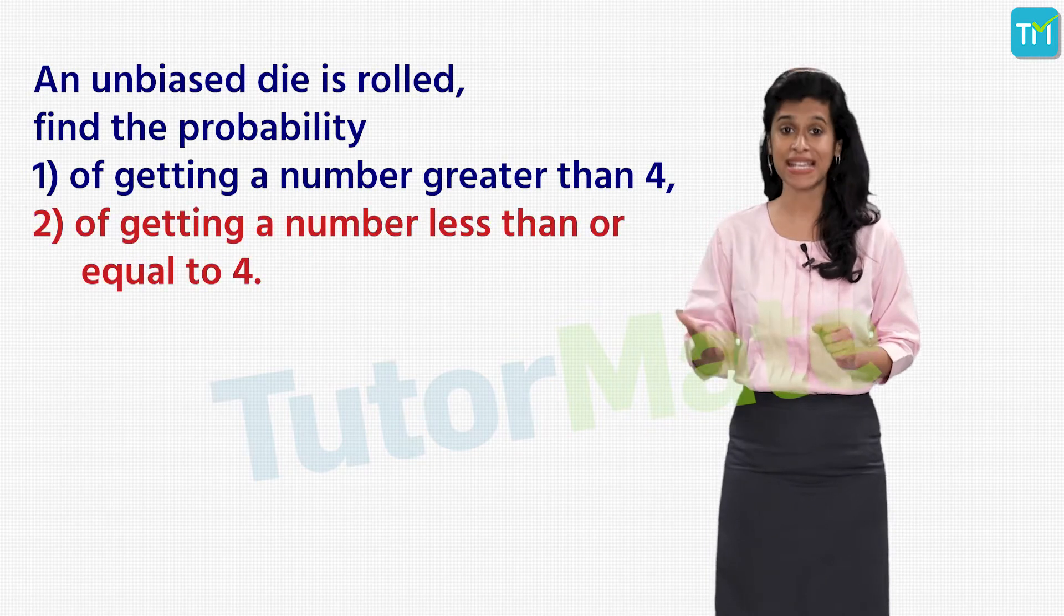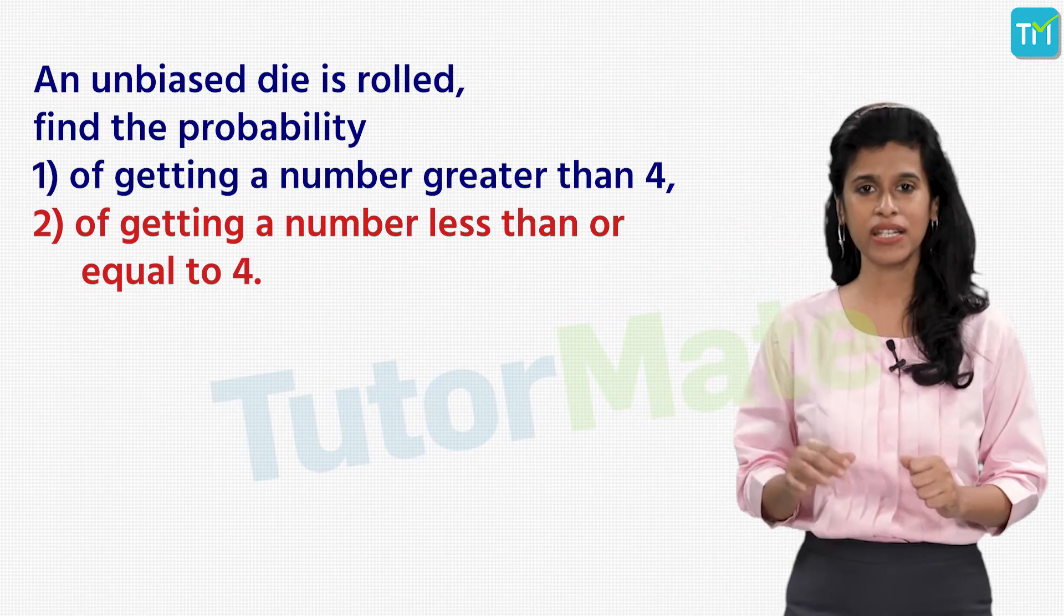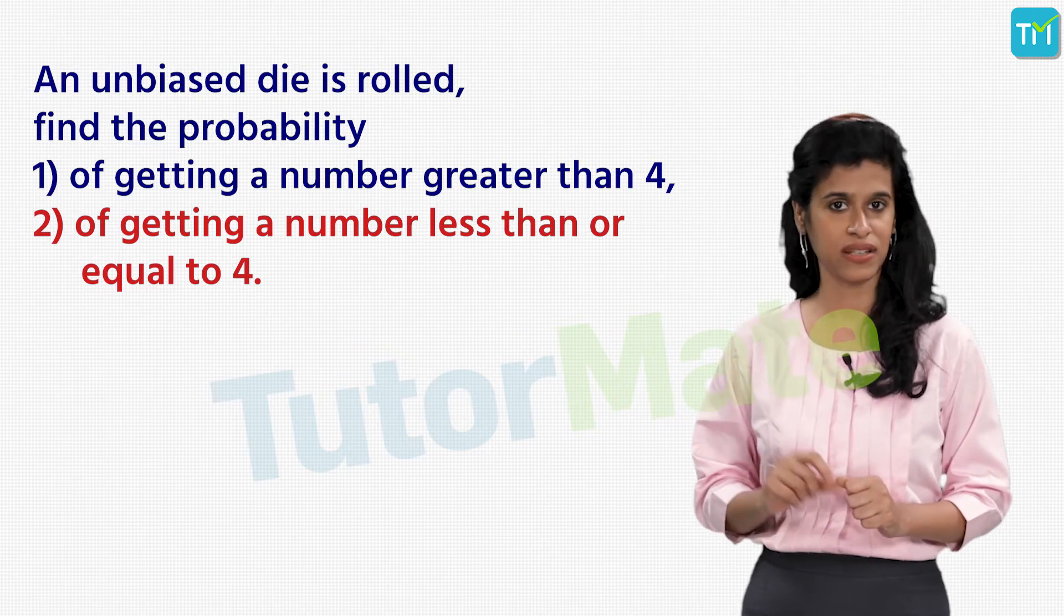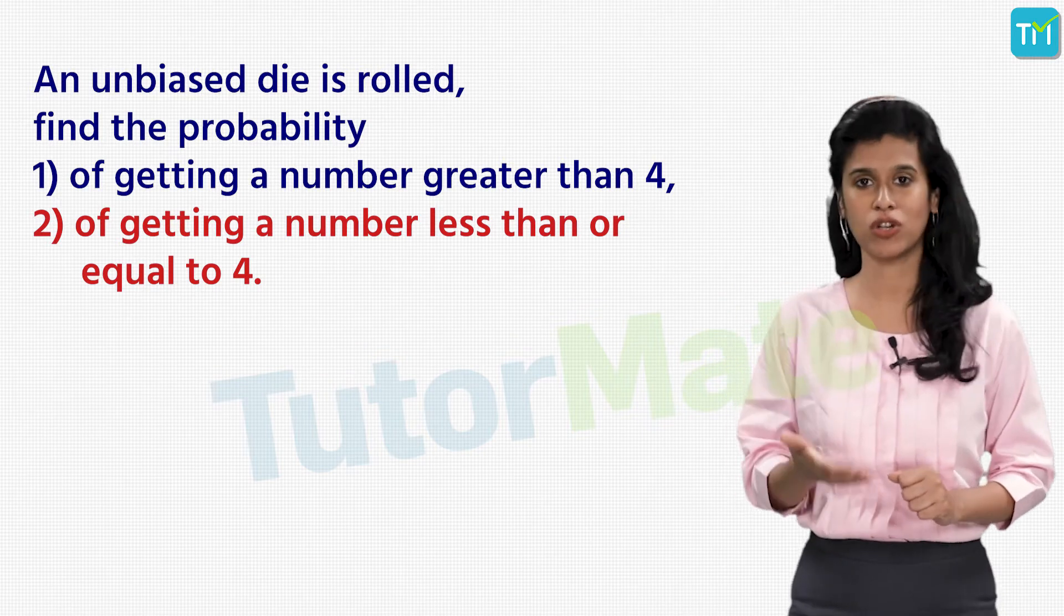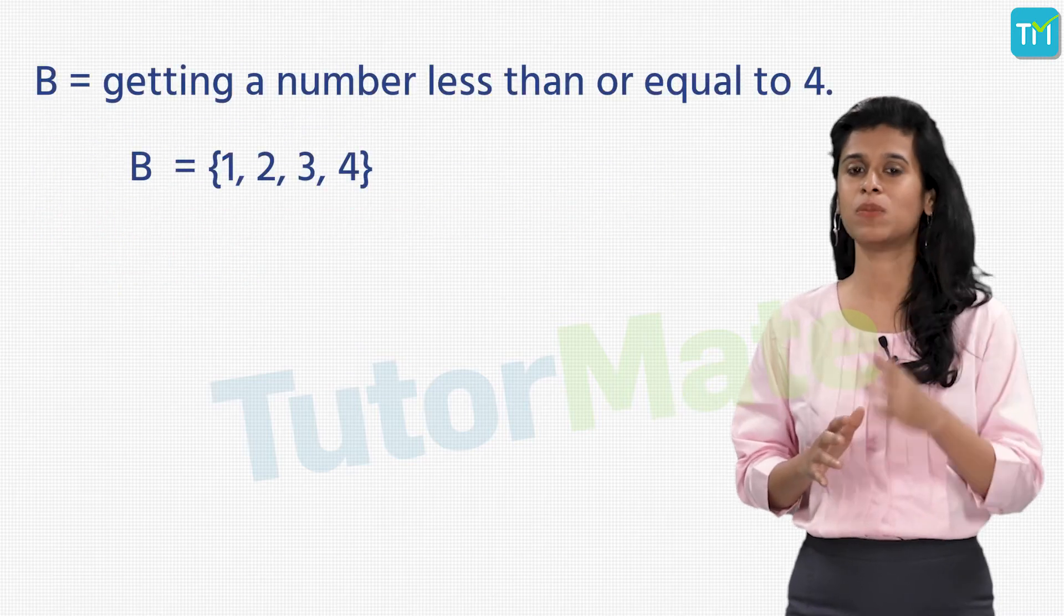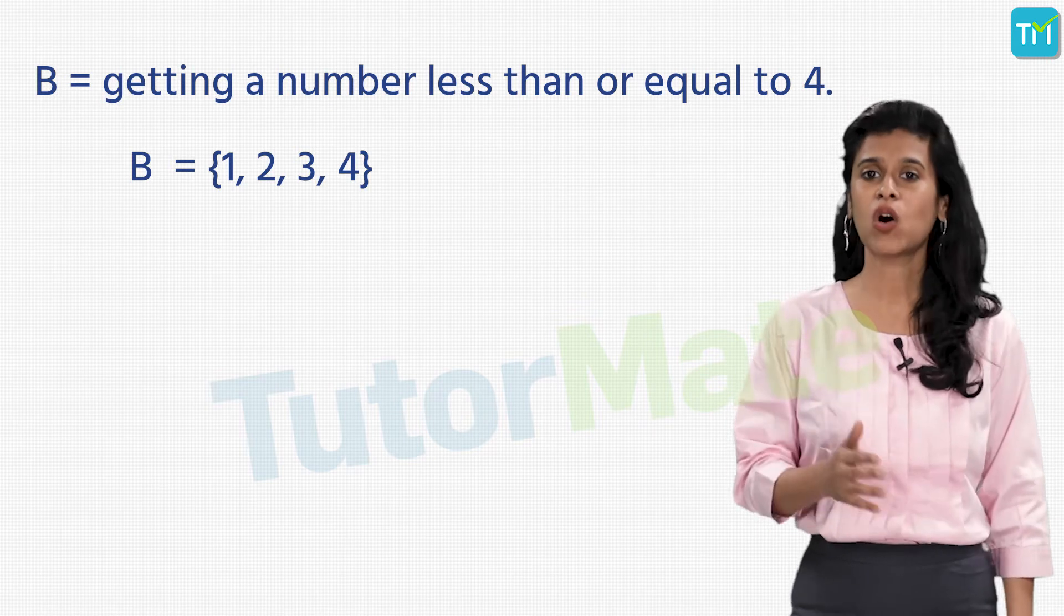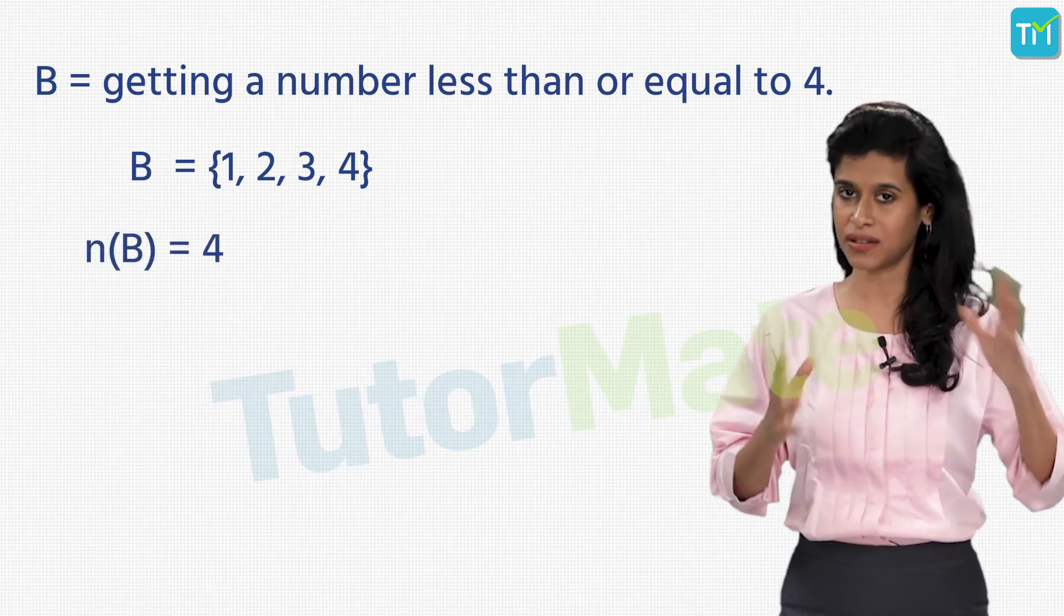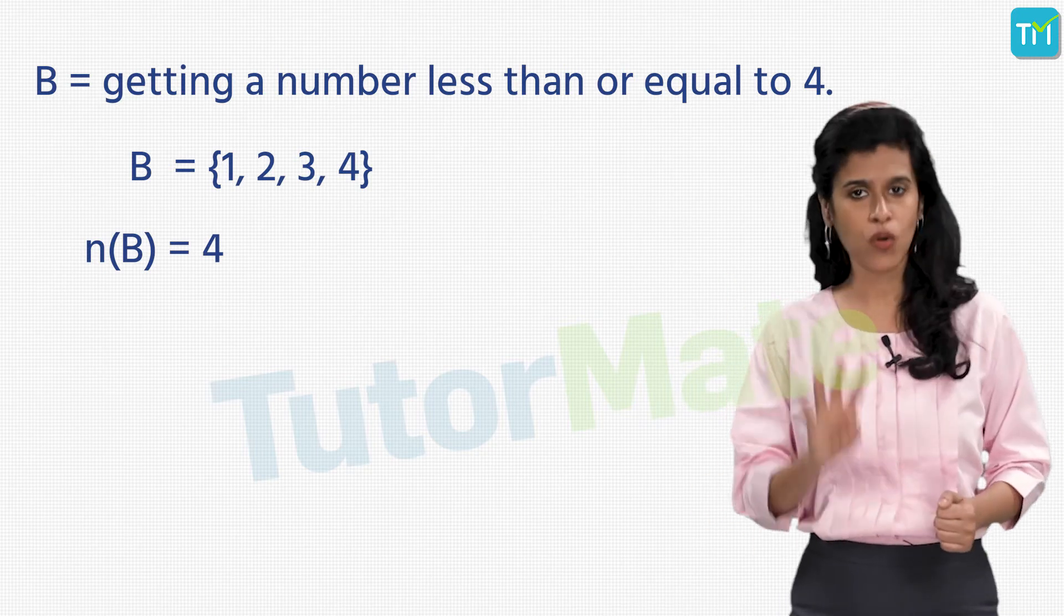Now the next event is getting a number less than or equal to 4, and we have to find its probability. Here it is clearly mentioned that the desired outcome has to be less than or equal to 4, right? So when we consider this event, the number 4 is also included. Along with that, we will have the favorable outcomes as the numbers less than 4, that are 1, 2, and 3. If we call this event as B, we will get B = {1, 2, 3, 4}.